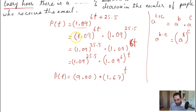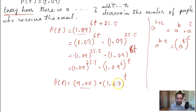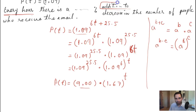So now, back to the original question: every hour, what percentage addition or decrease occurs in the number of people who receive the email? Our rewritten function has a starting value of approximately 9, multiplied by 1.67. Because it is multiplied by 1.67, the output of the function is being increased by 67 percent with every one-hour increment of t.